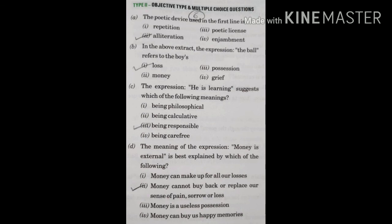The meaning of the expression 'Money is external' is best explained by: Money can make up for all our losses, OR Money cannot buy back or replace our sense of pain, sorrow, or loss. The correct answer is the second: money cannot buy back or replace our sense of pain, sorrow, or loss. Money can only bring external or material happiness; it cannot compensate for the sense of pain, sorrow, or loss.